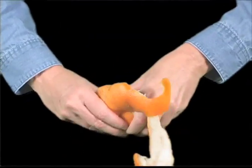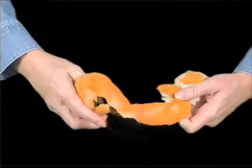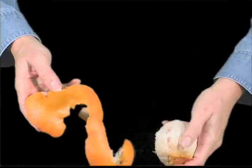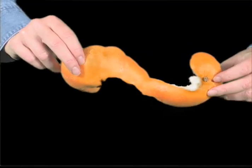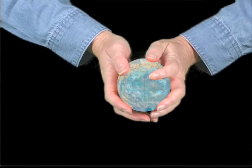With an orange, the skin can be peeled and flattened. Our planet can't be peeled back. Instead, map projections are used for creating maps. How is this done?